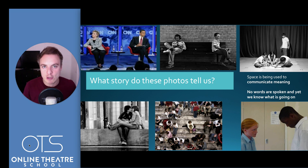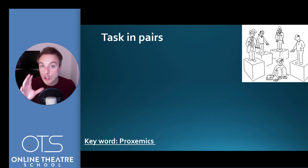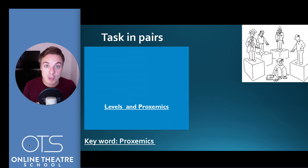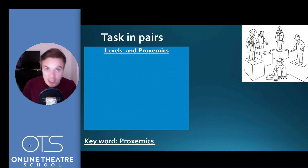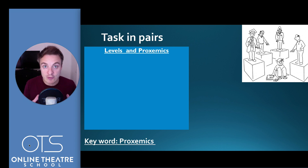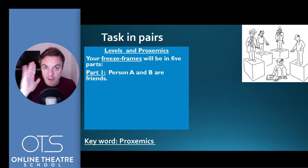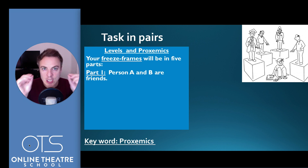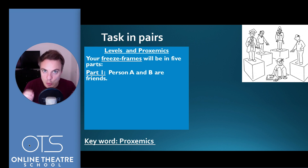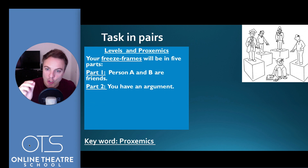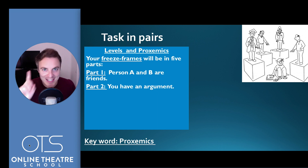So how can you use proxemics? I've got a little task for you. You can do this in pairs or in groups — include no speech, no talking, no dialogue, just freeze frames. If you're unsure what a freeze frame is, there's a video on the Online Theatre School that explains freeze frames. It's going to be in five sections. Section one: person A and B are friends — communicate that you're friends just by using proxemics, the space and distance between the characters. Section two: you have an argument — show that you've had an argument just by using the space and distance between the actors.